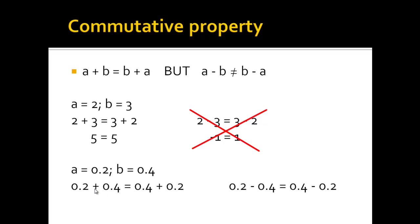0.2 plus 0.4 is always 0.6. However, 0.2 minus 0.4 is minus 0.2, while 0.4 minus 0.2 is plus 0.2,